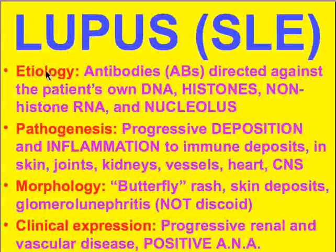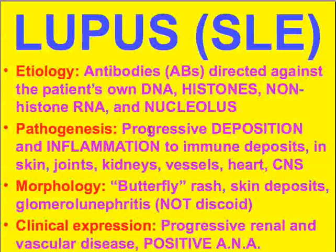The etiology of lupus is failure of the body to recognize the patient's own DNA, certain types of RNA, histones, proteins associated with DNA, and even a nucleolus as being normal. Therefore, the body makes antibodies against these. What cells, tissues, and organs have nuclei? Everything — that's why it's a systemic disease. The pathogenesis is progressive deposition of immune complexes and inflammation in areas where you have nuclei in cells, which is everywhere.